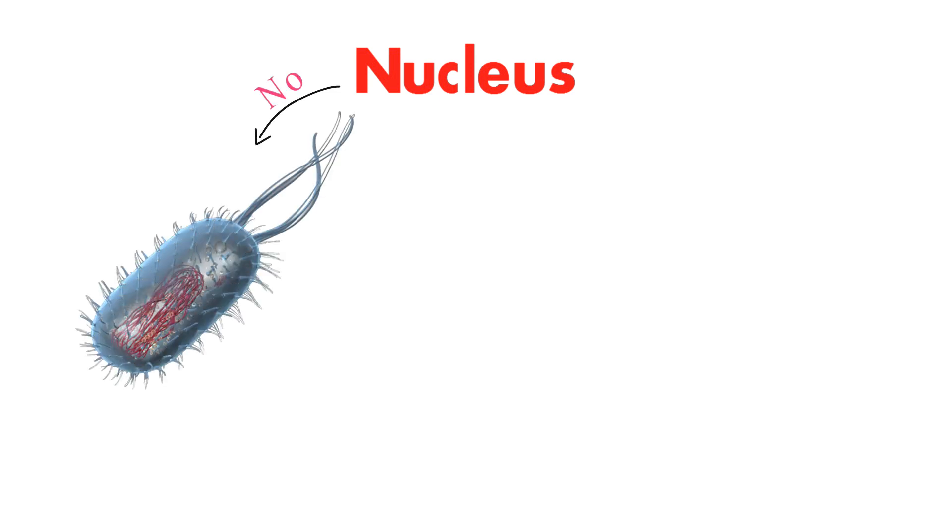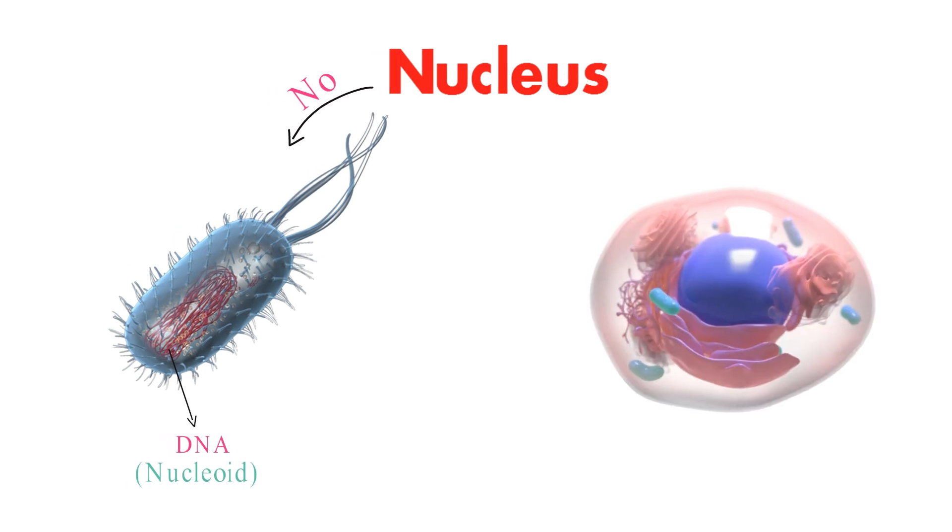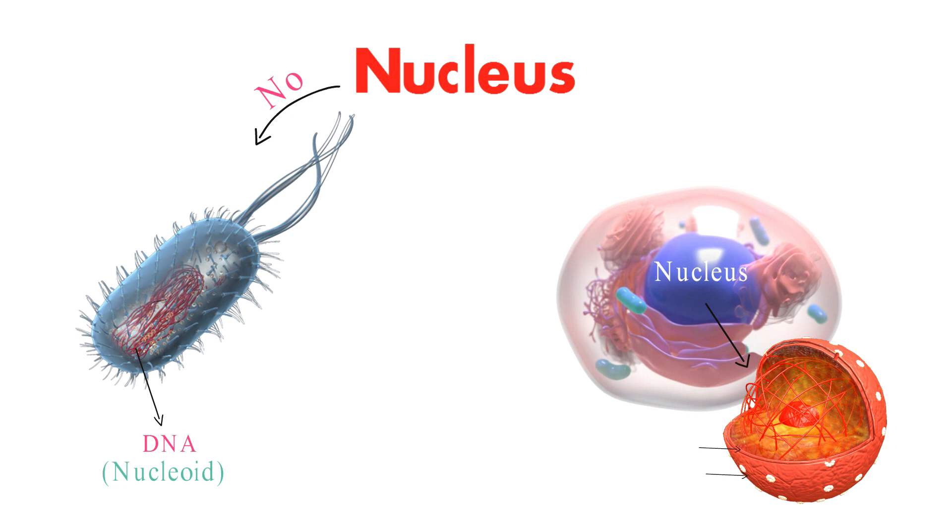Prokaryotic cells do not have a nucleus. Their DNA is concentrated in a region called the nucleoid, which is not surrounded by a membrane. Eukaryotic cells have a nucleus that is surrounded by a double membrane. The nucleus contains the cell's DNA, which is organized into chromosomes.